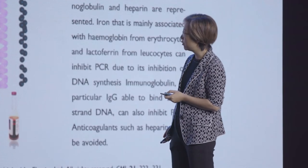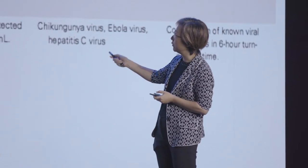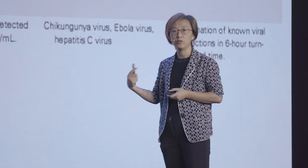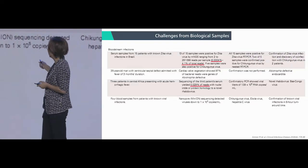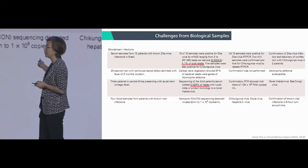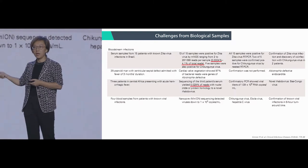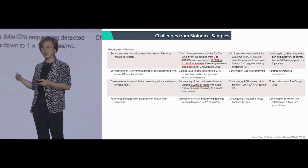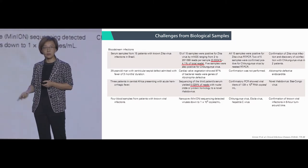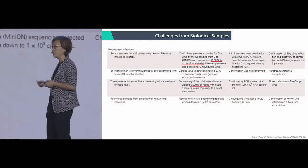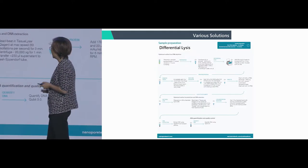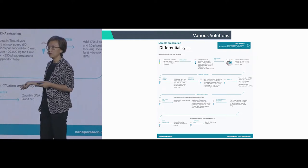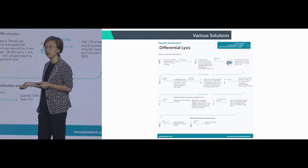This is what we usually see: if you do a bloodstream infection test, you will see around 0.00-something percent of infectious agents — including bacteria or virus — in your final sequencing results. You've been wasting a lot of sequencing capacity on human reads. There are different technologies to address this.